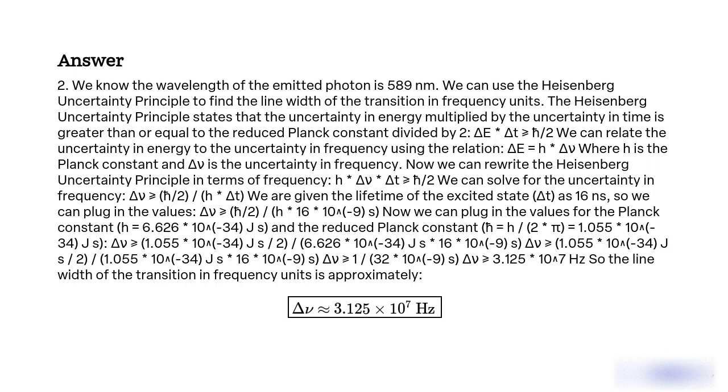So the line width of the transition in frequency units is approximately Δν ≈ 3.125 × 10⁷ Hz.